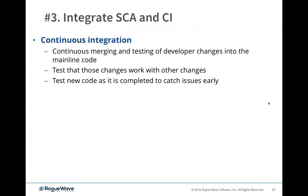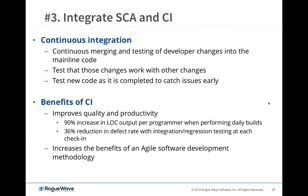The third best practice is integrating SCA with your CI — continuous integration — environment. CI means continuously merging and testing each developer change into the main code base, so every time a developer adds one feature or fixes one bug, that change is tested in the context of the rest of the system automatically and immediately. The developer gets very quick feedback if they broke something. The key is not waiting a month or three months to do integration and then finding lots of things broken. The benefits are powerful and quantified: a 90% increase in lines of code output per developer with a daily build — that's almost doubling productivity.